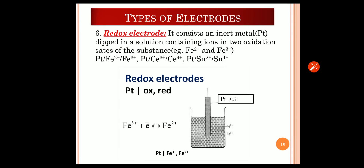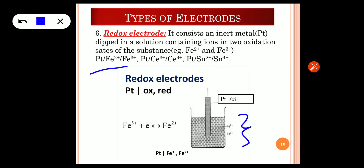The sixth type is the redox electrode. In a redox electrode, the platinum metal is in contact with two ions of the same element in different oxidation states — for example, platinum in contact with Fe²⁺ and Fe³⁺. This electrode is used in potentiometric titration as a working electrode. Platinum acts as an inert metal — like a postman — it simply accepts and gives electrons when in contact with two ions of different oxidation states. Such an electrode is called a redox electrode.